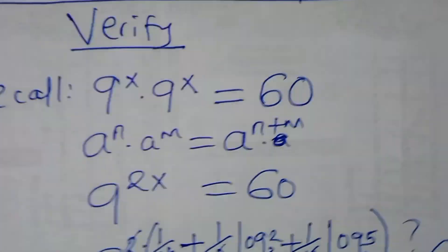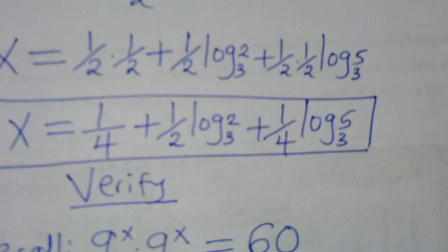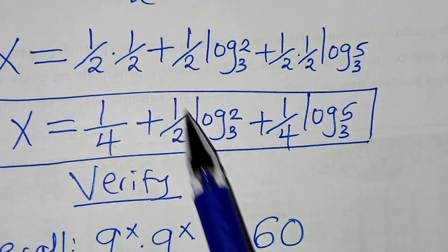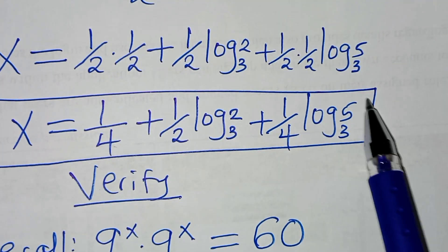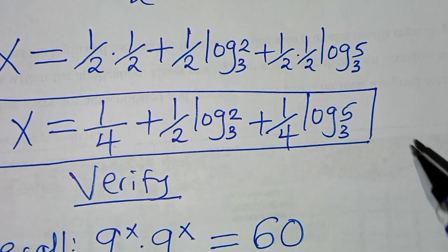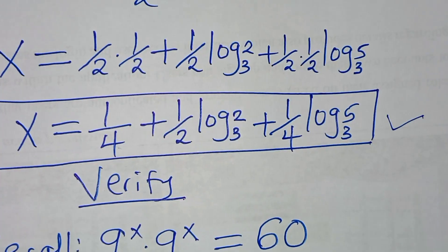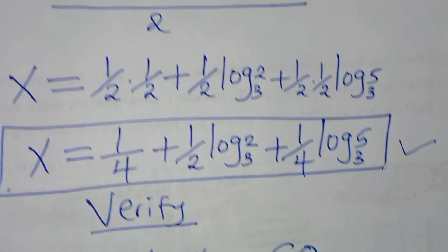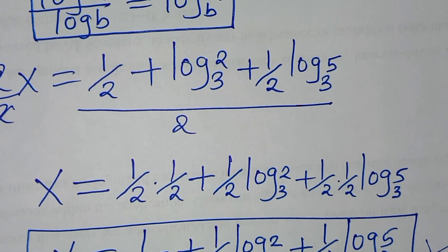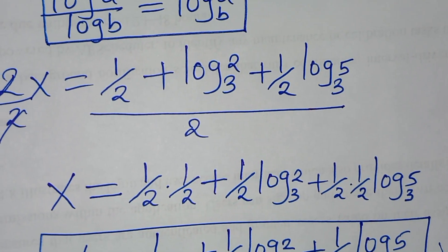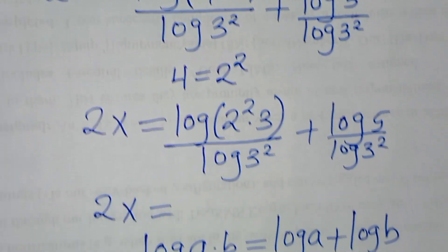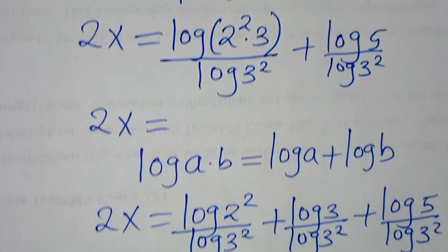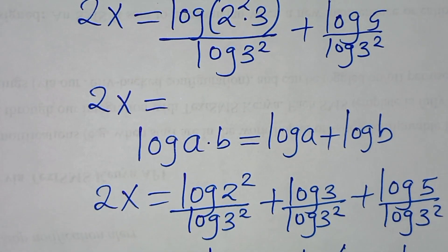This implies that the value of x, which is 1 over 4 plus one half log base 3 of 2 plus 1 over 4 log base 3 of 5, actually satisfies the equation. Please like this video and subscribe. See you in the next video. Bye bye.